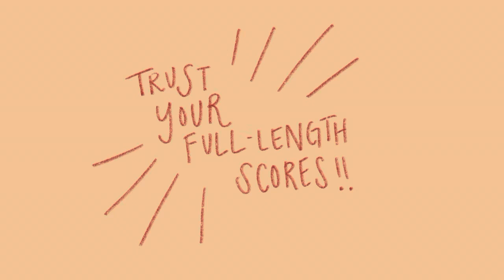One final thing: trust your full-length scores. The AAMC full-lengths are going to be the most accurate predictor of what you'll get on actual test day. If you're feeling really anxious about this test, just study to the point where you're scoring within your goal range on the AAMC full-lengths, and have the confidence to know that since you've done it on the AAMC tests, you can do it on the actual test as well. My test score was essentially an average of all my AAMC full-length tests. I hope that helps — that was the overview of how to make an MCAT schedule. Feel free to subscribe if you want to see more medical content, because I'm starting medical school in the fall.